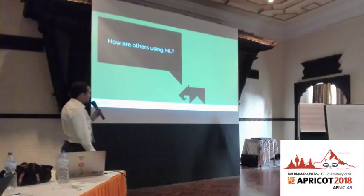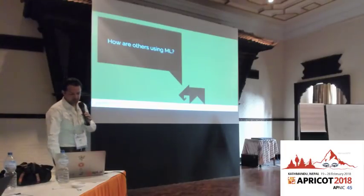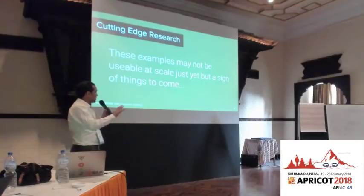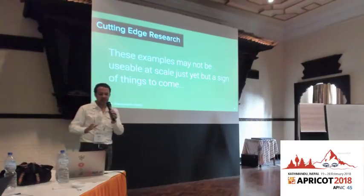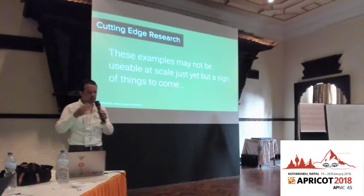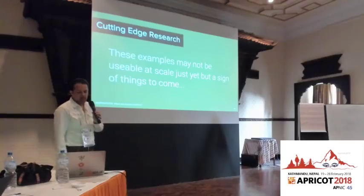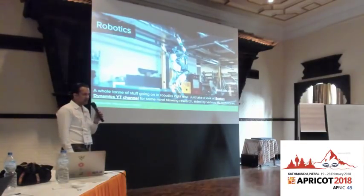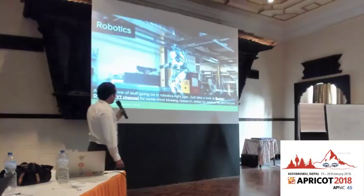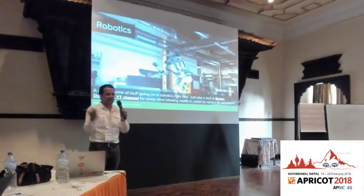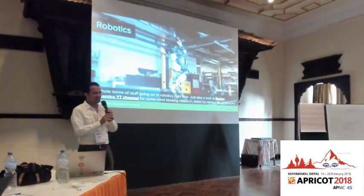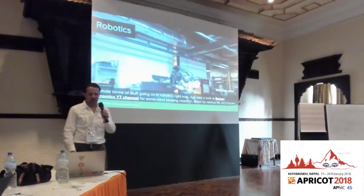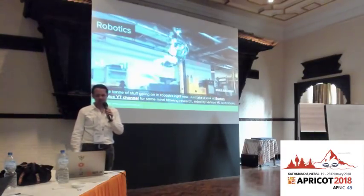So how are others using machine learning? This is cutting-edge research, not always designed to be used at scale, but a good taste of things to come. The first example is robotics — this is a robot from Boston Dynamics that can do backflips. I can't even do a backflip, yet we've got robots better than us at acrobatics. If you'd asked me ten years ago if we'd be doing this now, I would have said no — but here we are nonetheless.